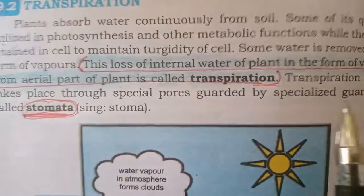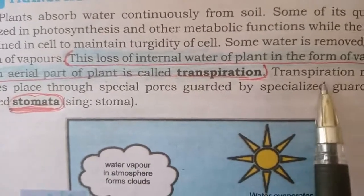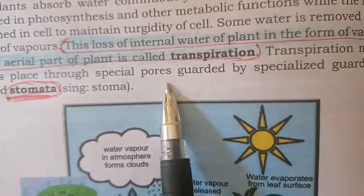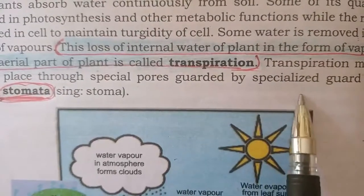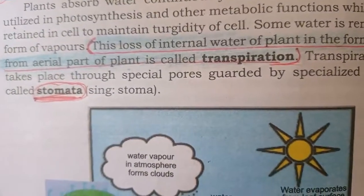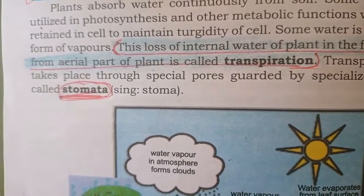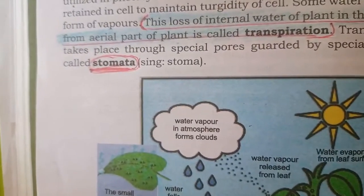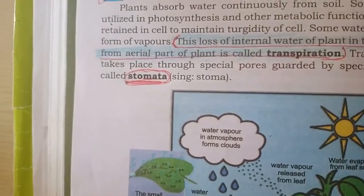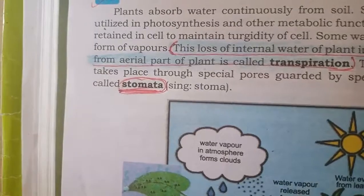اب transpiration ہوتی کیسے ہے؟ Transpiration mainly takes place through special pores guarded by specialized guard cells called stomata. یعنی leaves کے پاس ایک خاص قسم کے cells ہوتے ہیں جن کو ہم stomata کہتے ہیں — اور stomata کے ذریعے continuously water loss ہو رہا ہے۔ اس کے لیے آپ page number 180 پر آئیے۔